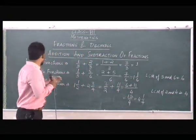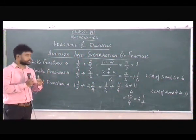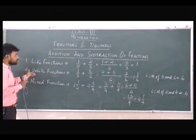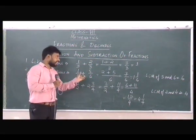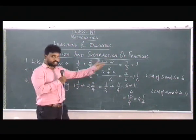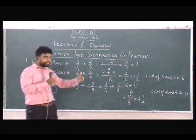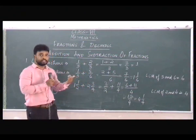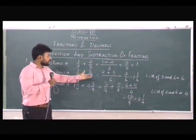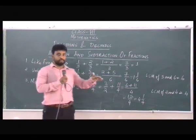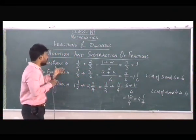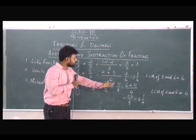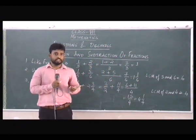So this is how we find the addition of fractions. When we have like fractions, we simply add the numerators and the denominator stays the same. When we have unlike fractions, we first find out the LCM of the denominators and adjust the numerators accordingly. When we have mixed fractions, we first change them into improper fractions, then follow the same process as unlike fractions. The similar method applies to subtraction — you'll get a minus sign and find the difference of the two numbers.